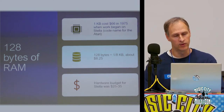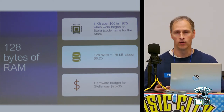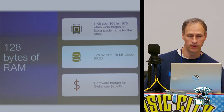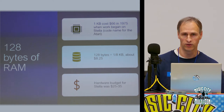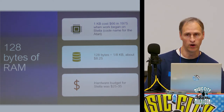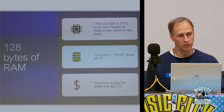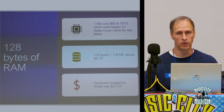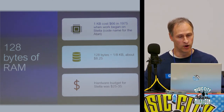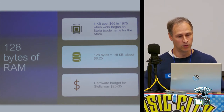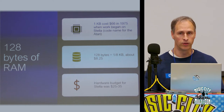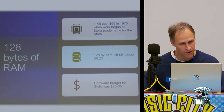So why only 128 bytes of RAM? Back then, a kilobyte of memory cost $66. To keep the Atari reasonably priced, they weren't going to spend $66 on the RAM. The system cost around $200-$250, so 128 bytes — about an eighth of a kilobyte — cost around $8. The hardware budget for Stella, the code name for the Atari being developed in '76 and '77, was $25-$35, so they used almost a third of their budget just on that 128 bytes of RAM.